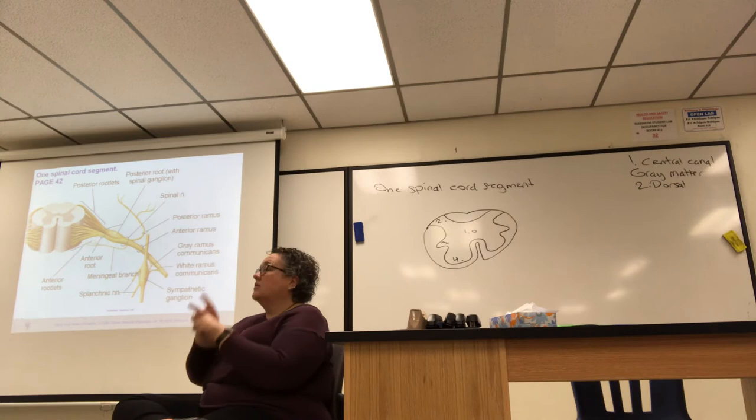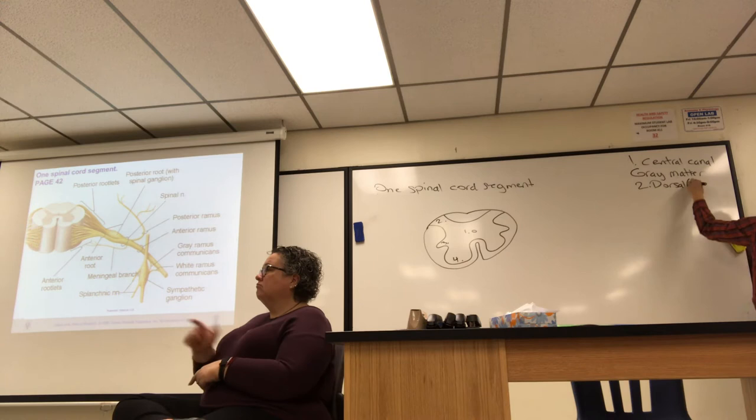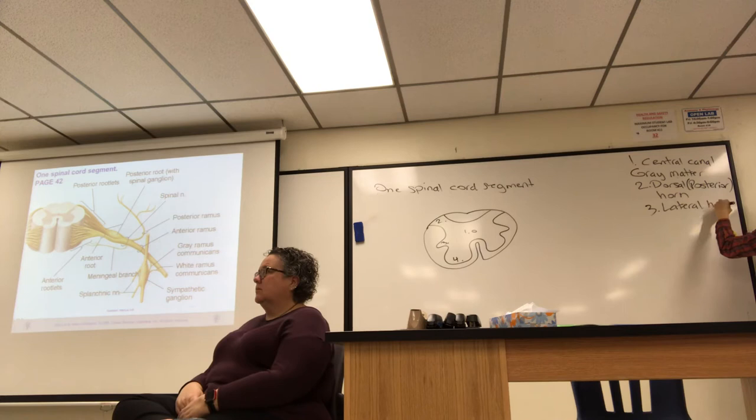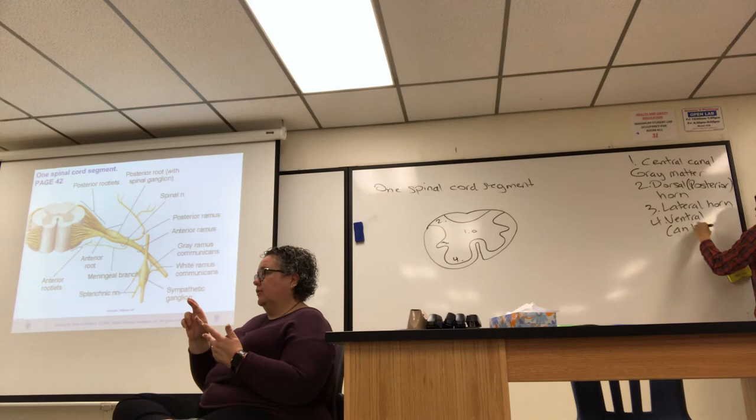Dorsal is the backside, also called posterior. So you can say dorsal horn or posterior horn — both terms are interchangeable. There is also the lateral horn and the ventral or anterior horn, and those terms are likewise used interchangeably.